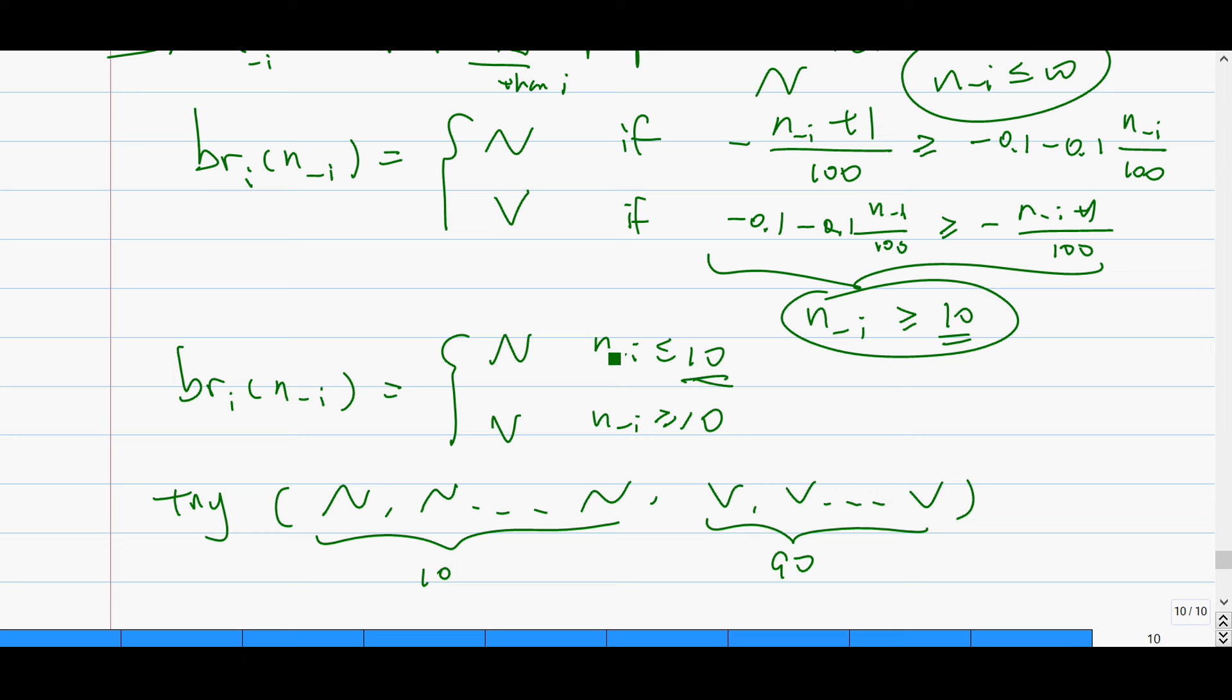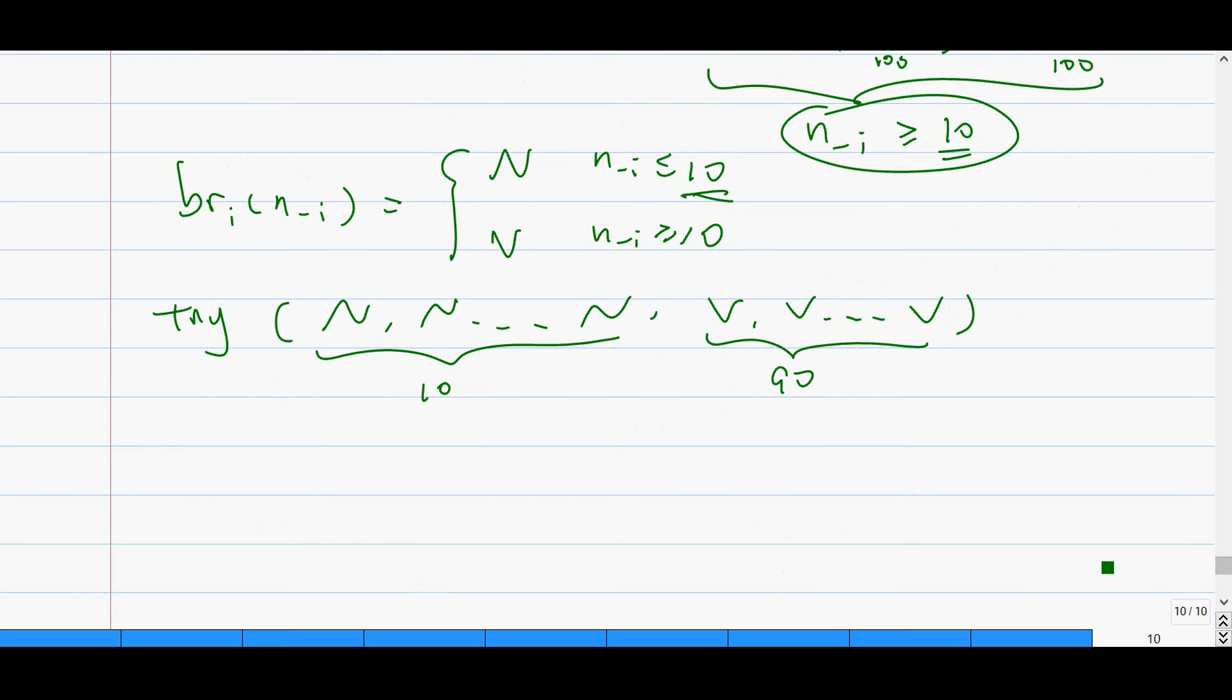And then the next thing, which is the important thing, is when you have to guess, you need to tell me why it is an actual equilibrium. So the check part is more important than the guess part because you don't know if you guessed it wrong if you don't check this.